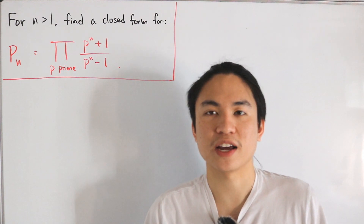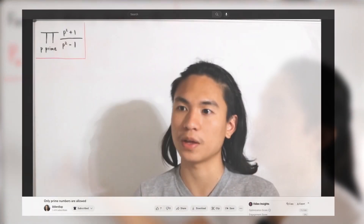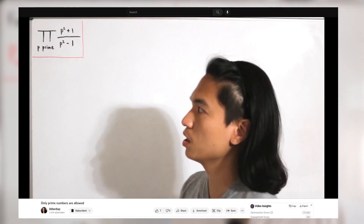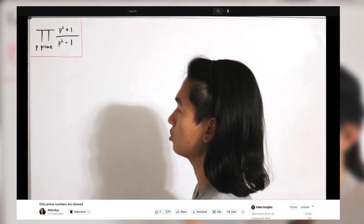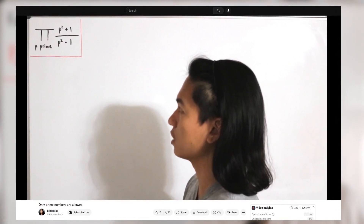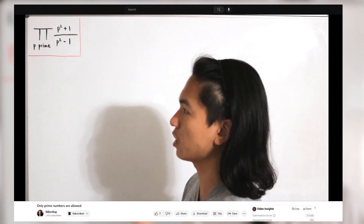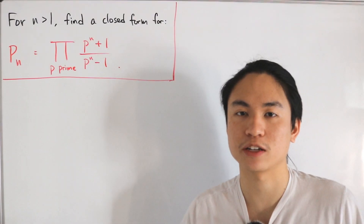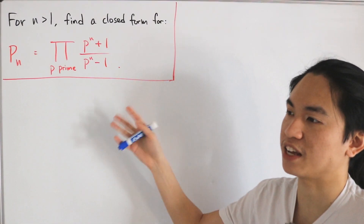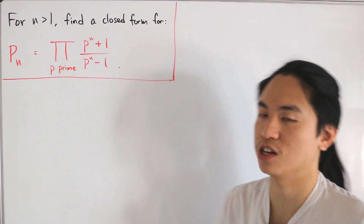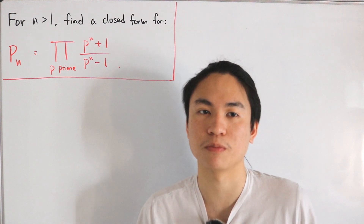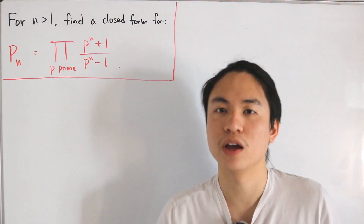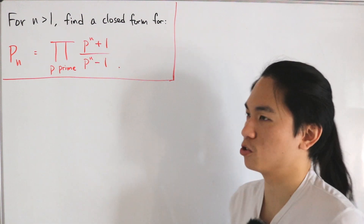In a past video I solved the same formulation for the n equals 2 case — the link is in the description below. Solving that out, we get it equals 5 over 2. Once we solve for the closed form here, we'll check validity by plugging in that case to confirm it works for all natural numbers except one.